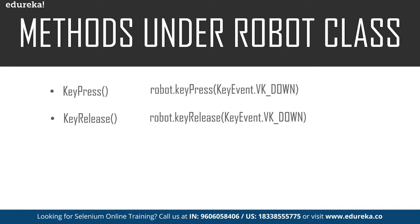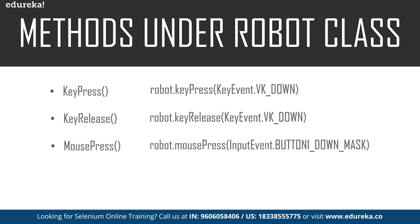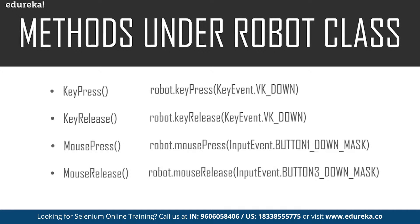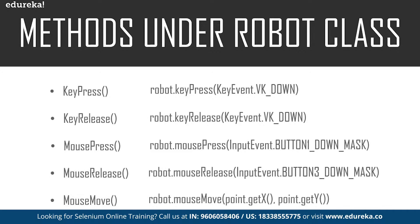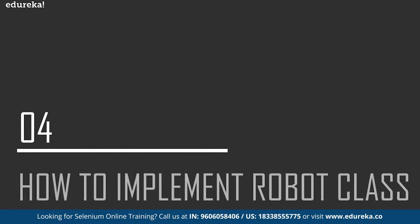Now let's look at the methods used to handle mouse functions. We have the mousePress method, which is used to press the left button of the mouse. Then we have the mouseRelease method, which is used to release the pressed button of the mouse. Finally, we have the mouseMove method, which moves the mouse pointer to specified X and Y coordinates — the command is robot.mouseMove() with the X and Y axis coordinates specified.